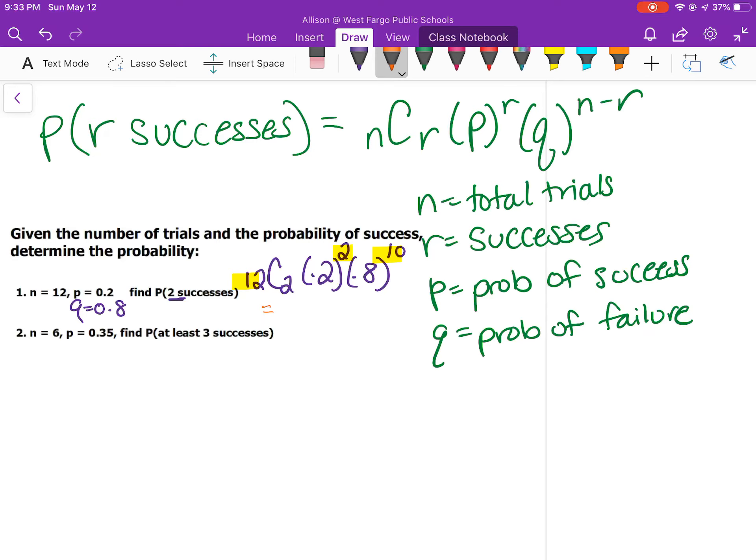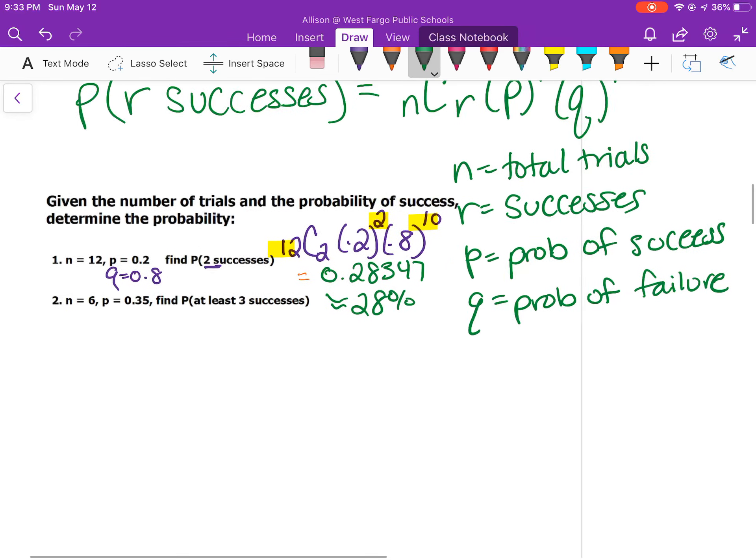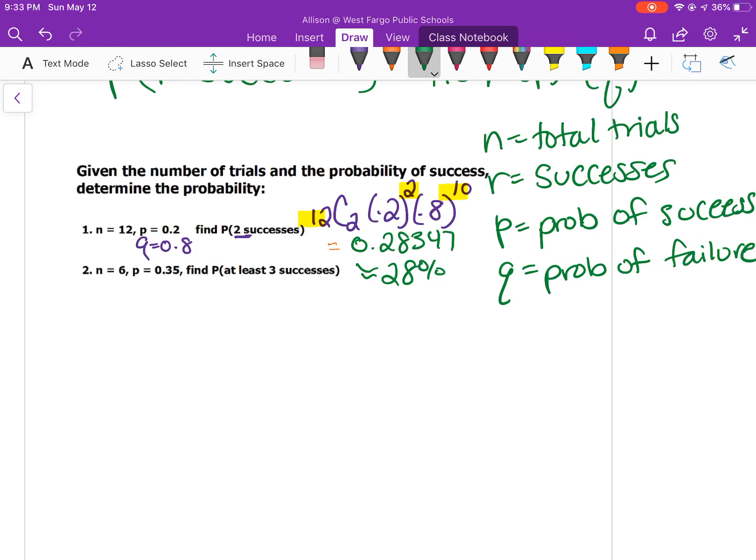Remember you go under the math key and over to the probability section. The combinations is the third choice. You put the 12 in first, then choose that probability choice, and then 2, and then finish multiplying that out. In your calculator you should get 0.28347, which we could say is approximately 28% probability of having two successes.